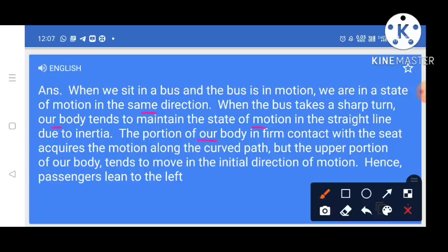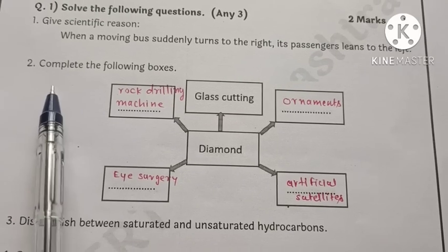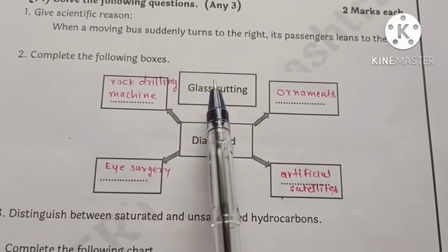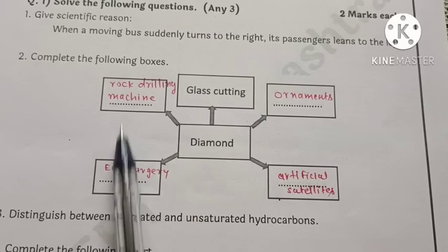The portion of our body in firm contact with the seat acquires the motion along the curved path, but the upper portion of our body tends to move in the initial direction of motion. Hence, passengers lean to the left.